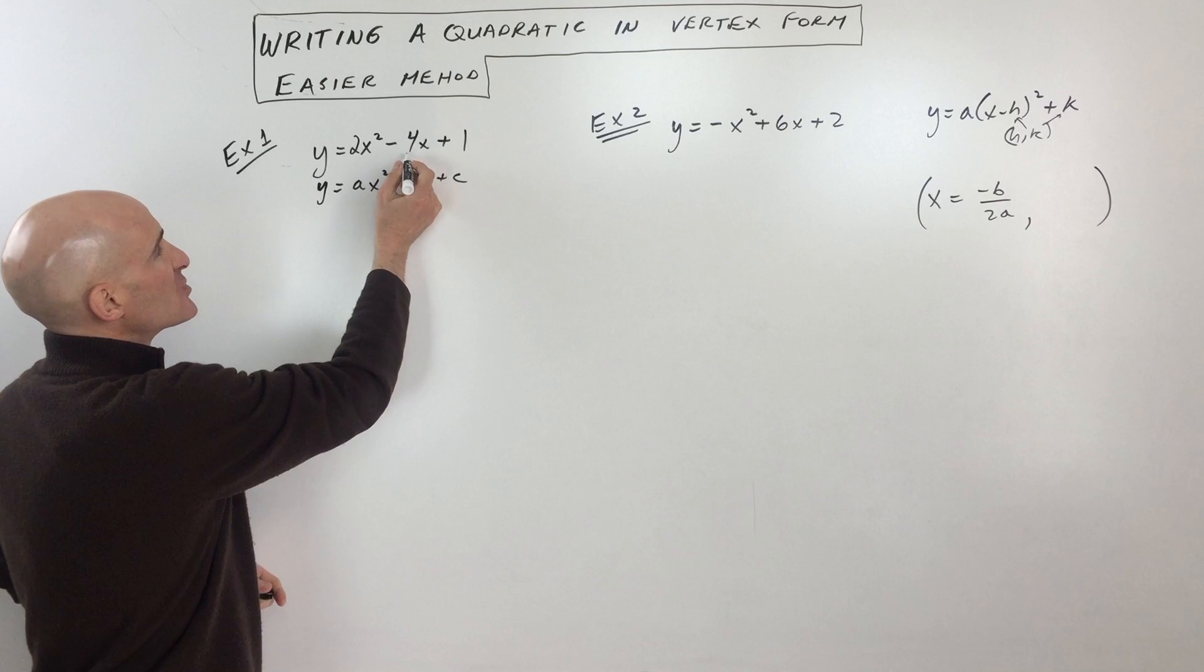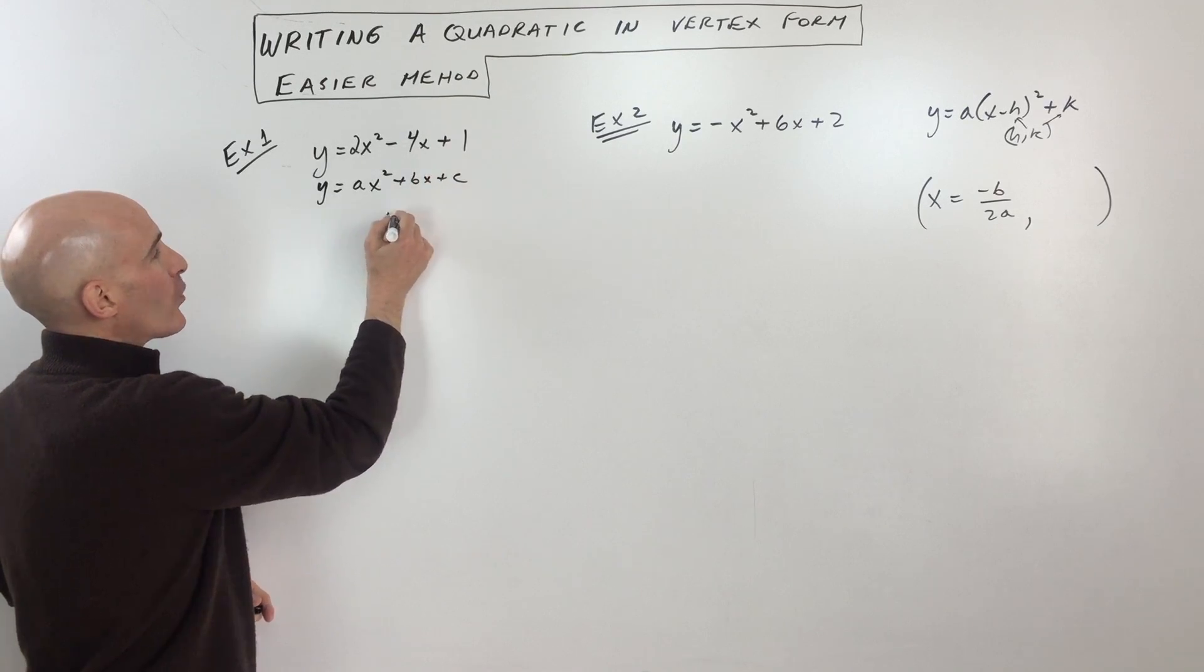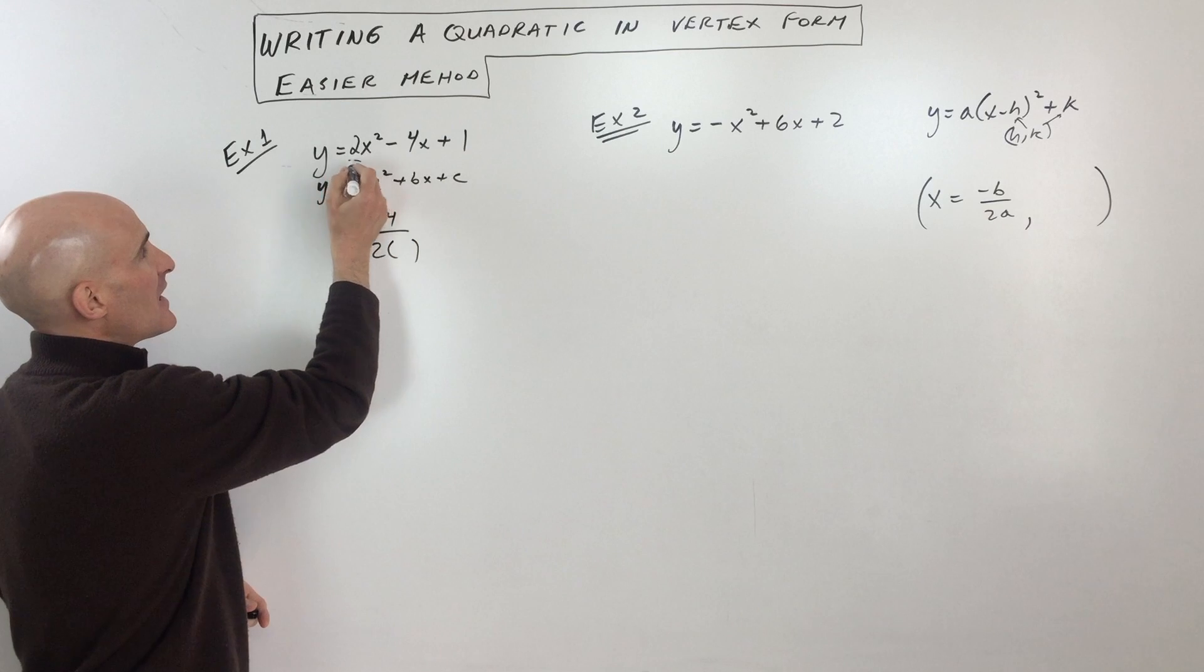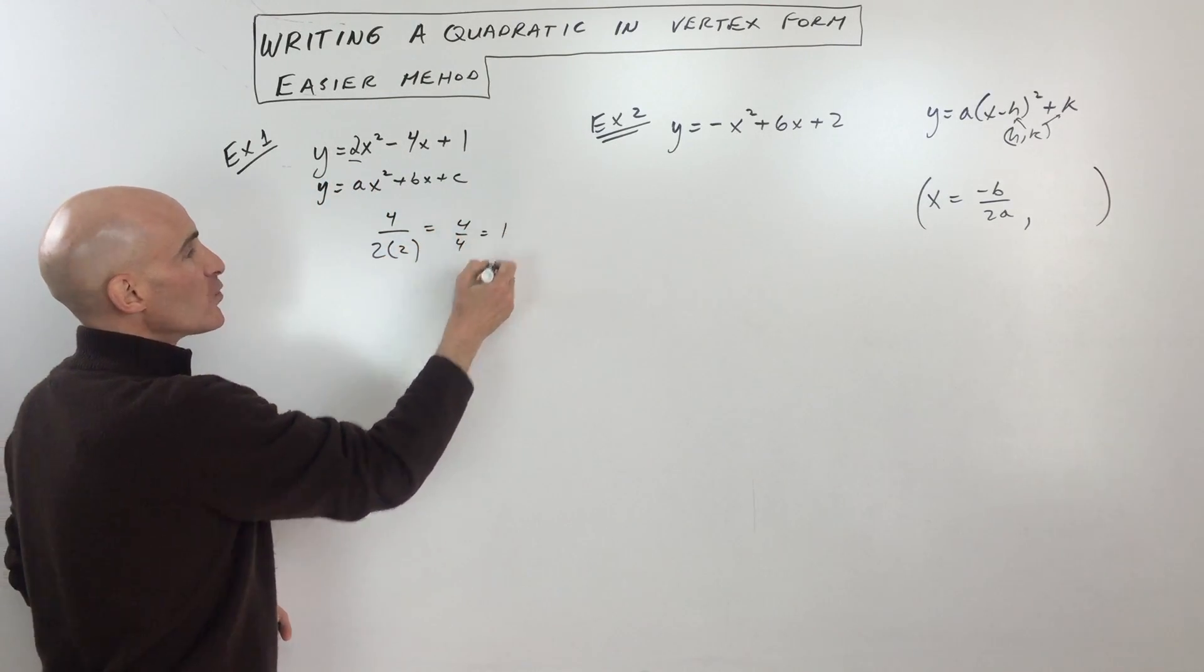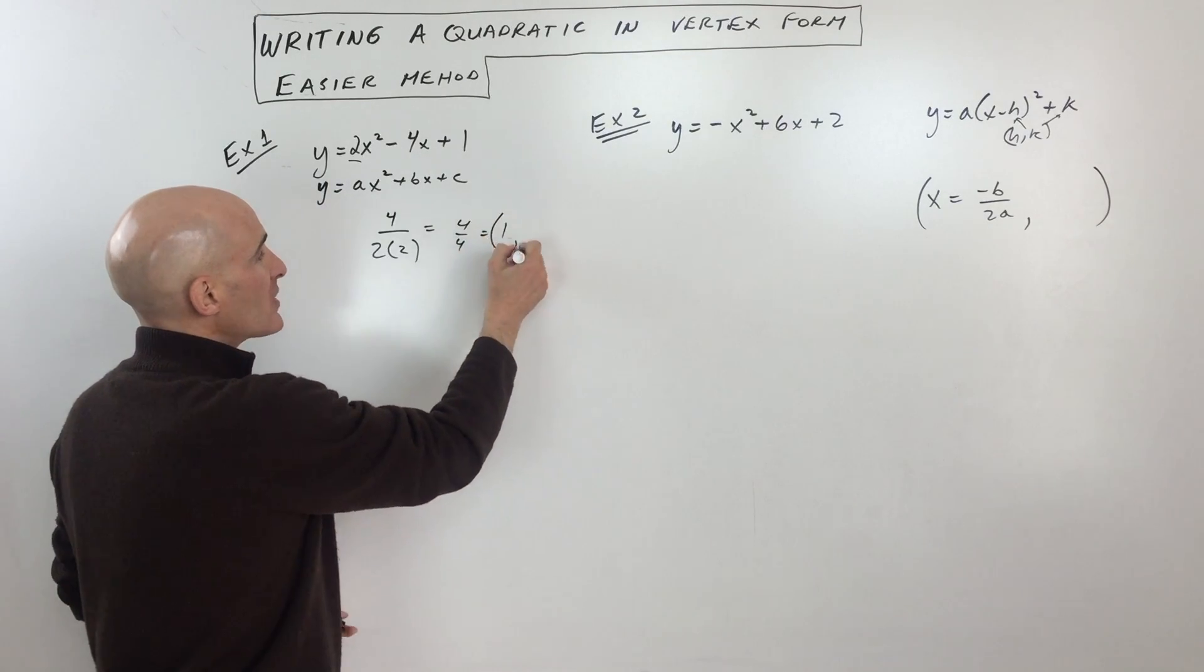So negative b over two a, that's gonna be the opposite of negative four, which is positive four, over two times a, which is two. And you can see we're getting four over four, which equals one. So that's the x-coordinate of the vertex.